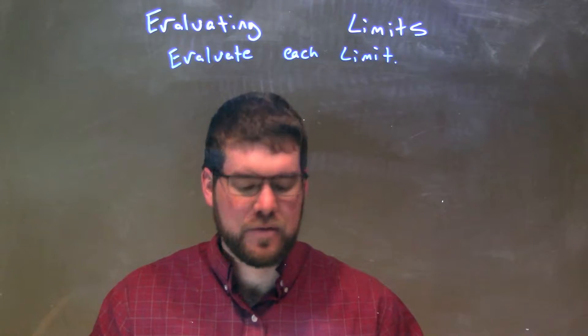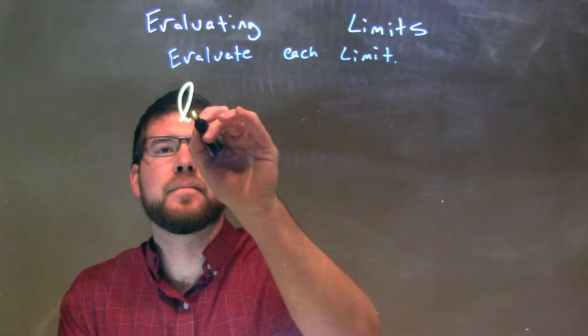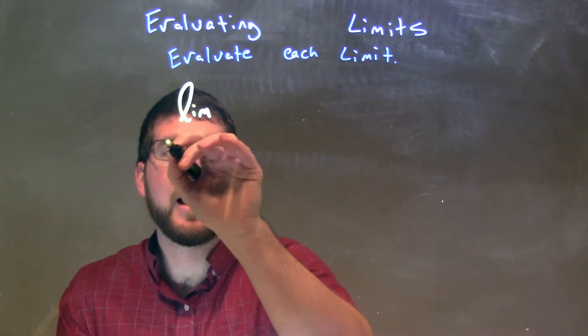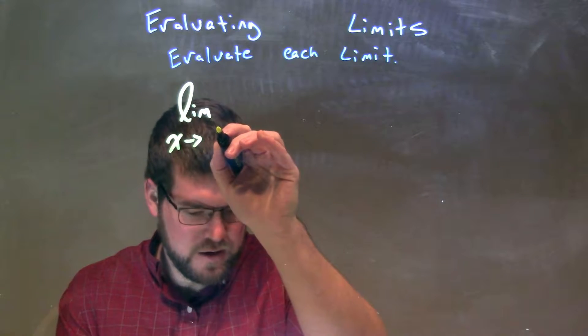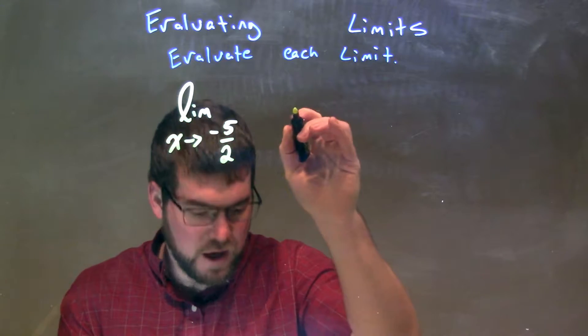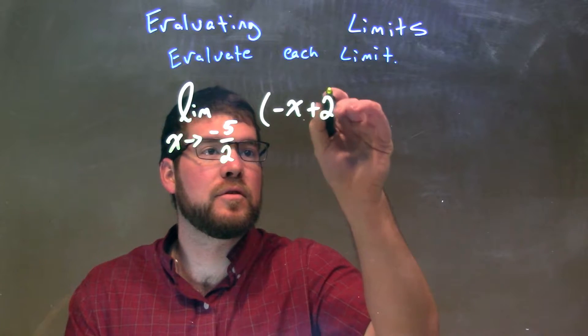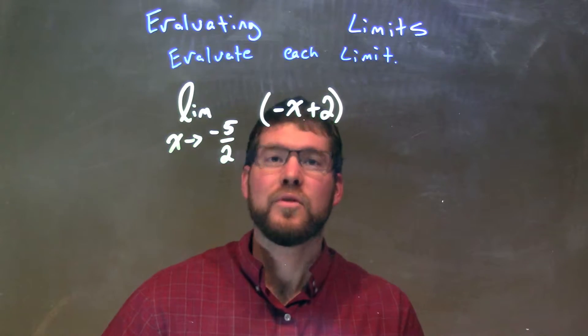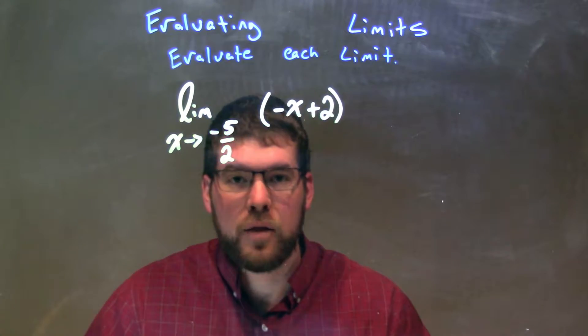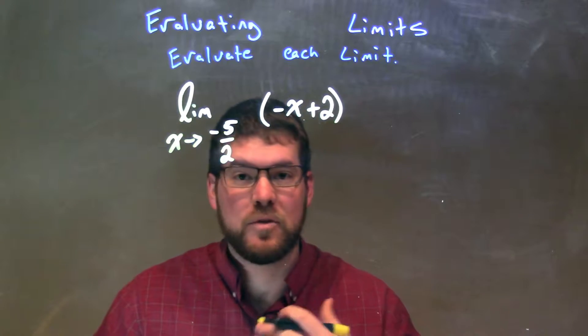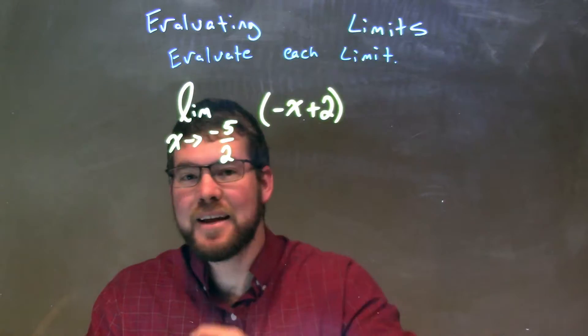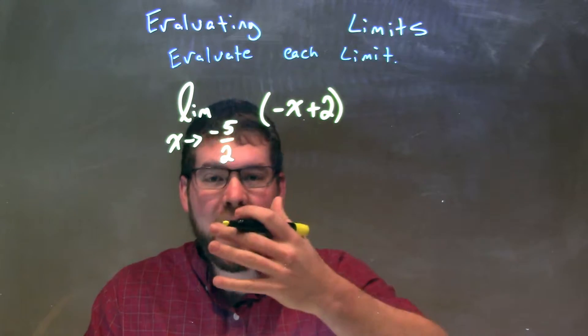If I was given this limit, the limit as x approaches negative 5 halves of negative x plus 2, well, since this is just a polynomial, and a polynomial is continuous everywhere, we can take the limit at any value.